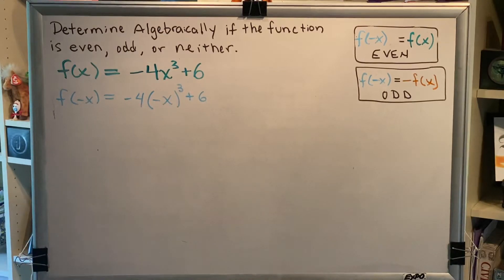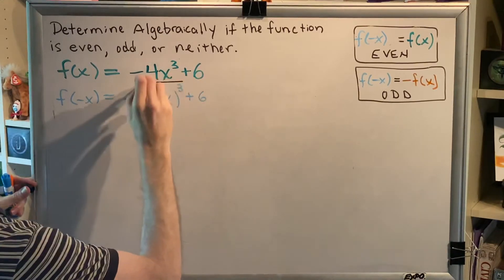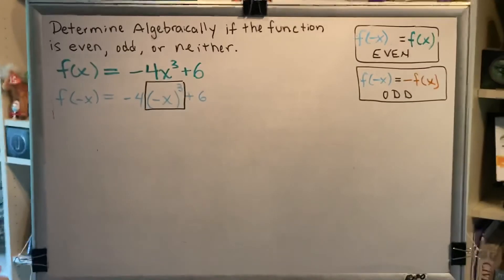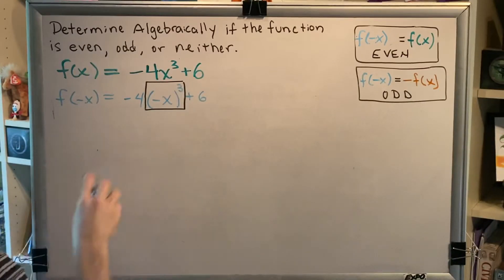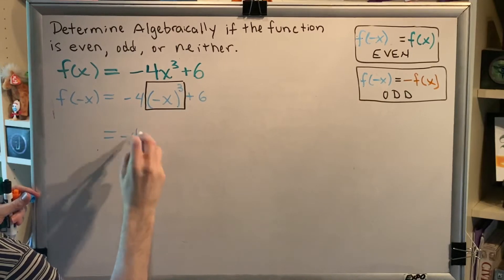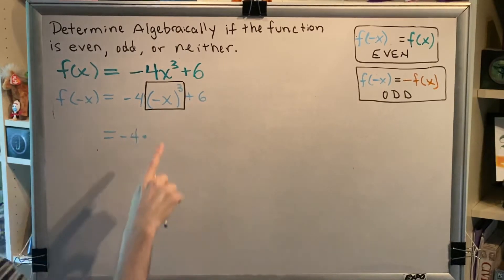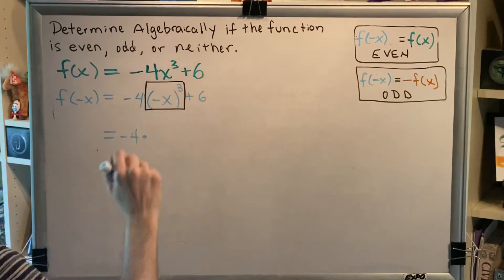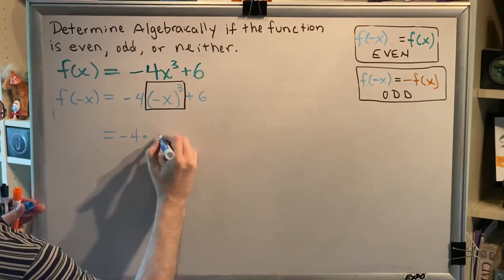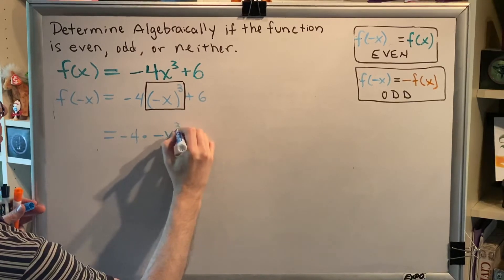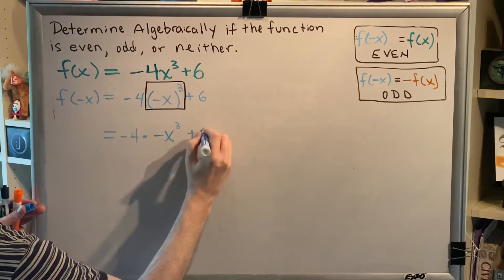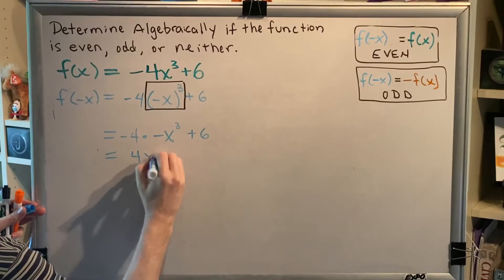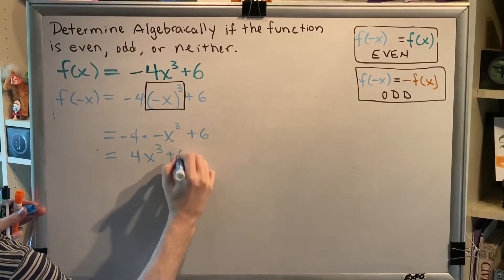Following order of operations, we need to do this part of the problem first. And so we're going to have negative 4 times a negative raised to an odd power produces a negative, and x raised to the third power makes x cubed. So this is negative x cubed. Then we have this plus 6 at the end. Now we simplify: negative times negative is positive, so we get 4x cubed plus 6.